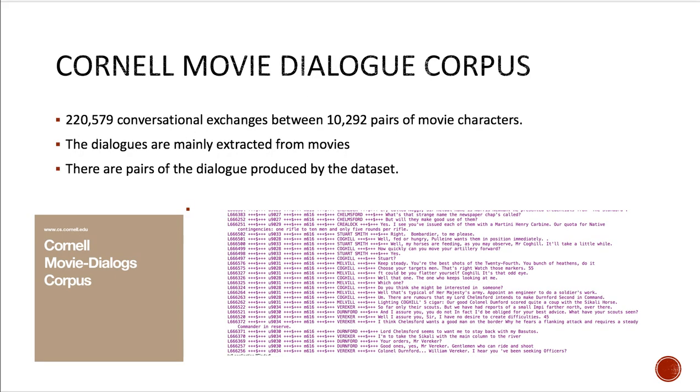We choose three datasets. The first one is the Cornell Movie Dialog Corpus. The Cornell Movie Dialog Corpus has more than 220,000 conversational exchanges between 10,000 pairs of movie characters. And the dialogues are mainly extracted from the movies.